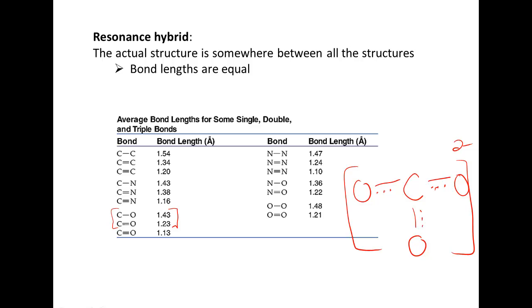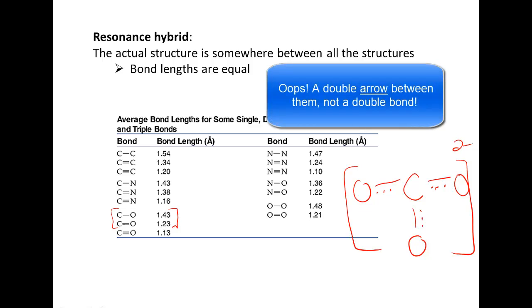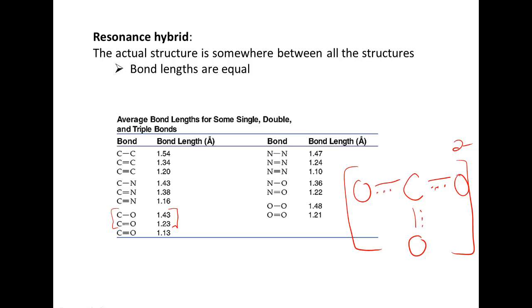In my class, though, I want you to put all three structures with a double bond between them, but know that the actual structure is a hybrid and is somewhere between all of those structures. So in our next video, we're going to learn about how to tell which resonance structures are going to contribute the most to this resonance hybrid. And you will do that by calculating something called a formal charge. So go ahead and go watch that last video before class and I will see you in that video.